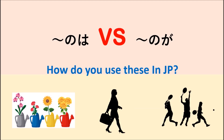The adjective is describing things like preference, skills, and abilities — such as SUKI (like), KIRAI (dislike), JOZU (skilled), HETA (unskilled), HAYAI (fast), and OSOI (slow). In cases like these, we will use NOGA, which means we use the adjective to describe the sentence.